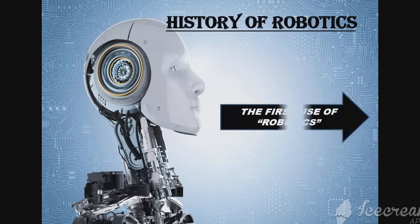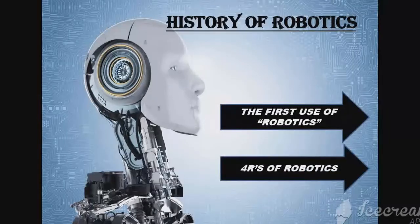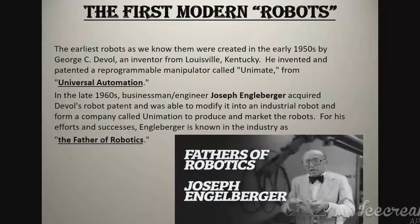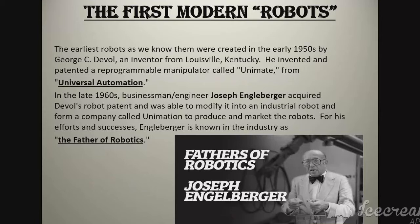The history of robotics — the first modern robots. The earliest robots as we know them were created in the early 1950s by George C. Devol, an inventor from Louisville, Kentucky. He invented and patented a reprogrammable manipulator called Unimate, from Universal Automation. In the late 1960s, businessman and engineer Joseph Engelberger acquired Devol's robot patent and was able to modify it into an industrial robot, and formed a company called Unimation to produce and market the robots. For his efforts and successes, Engelberger is known as the father of robotics.